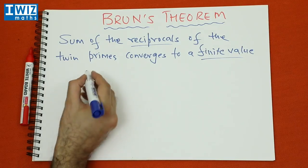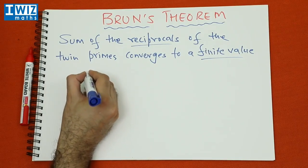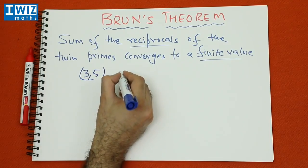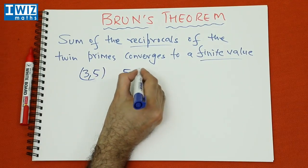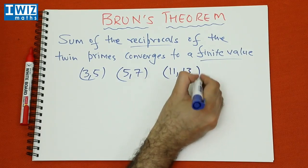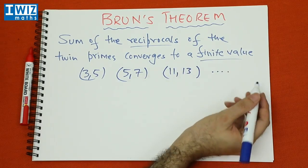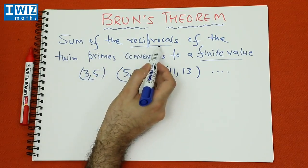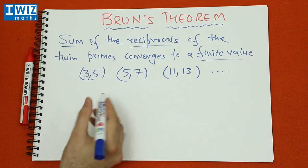And essentially what it says is the following. So if we consider the first couple of twin primes, just as an example, so you have 3, 5, you have 5, 7, you have 11 and 13, and so on. Now you are meant to consider the sum of the reciprocals, the sum of the reciprocals.